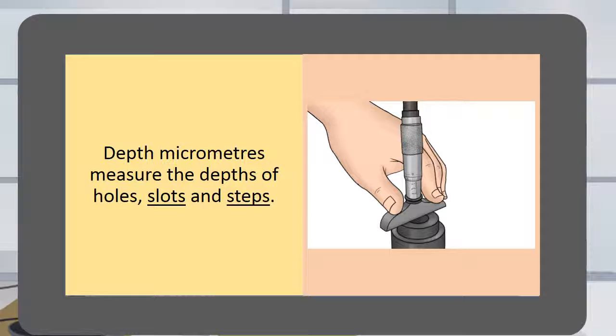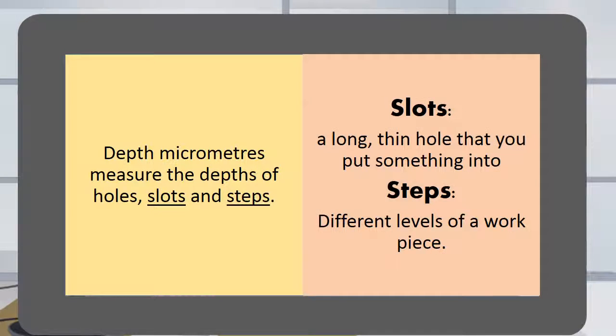Depth micrometers measure the depths of holes, slots and steps. A slot is a long thin hole that you put something into. Steps are different levels of a workpiece.